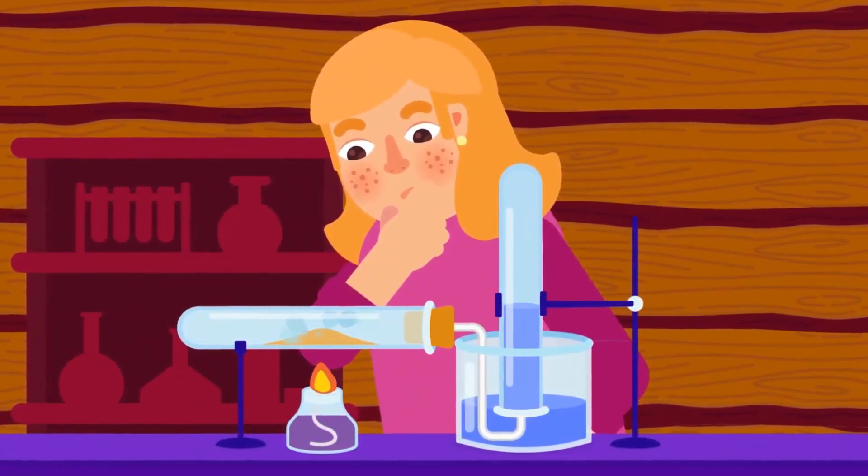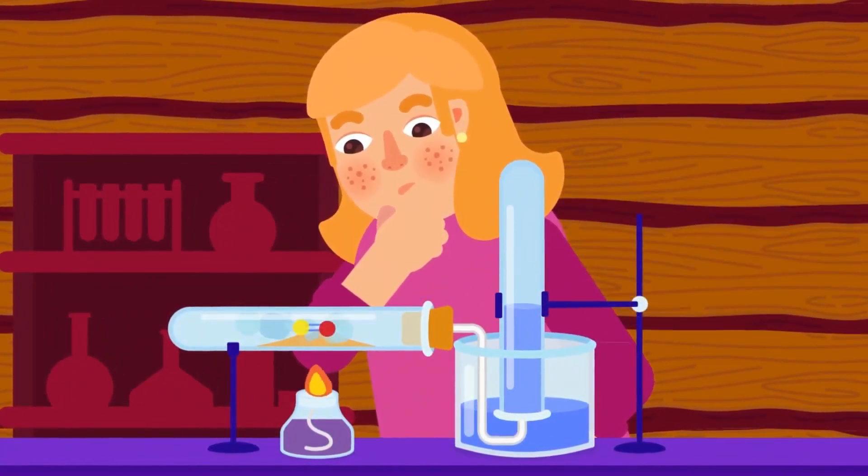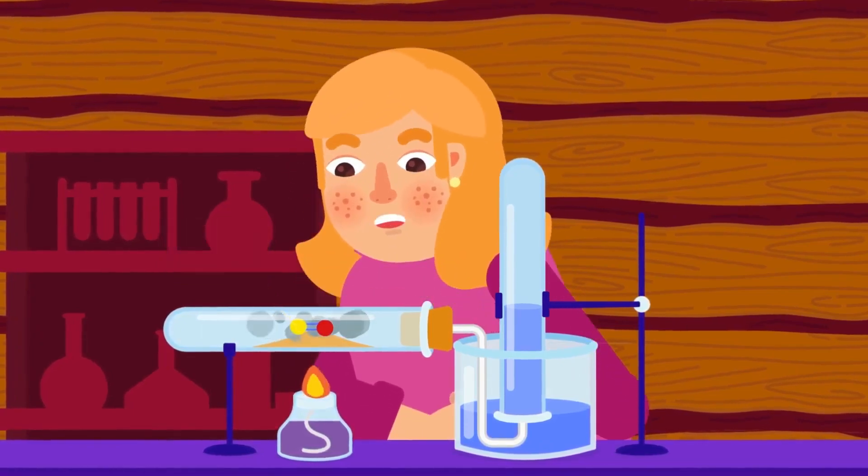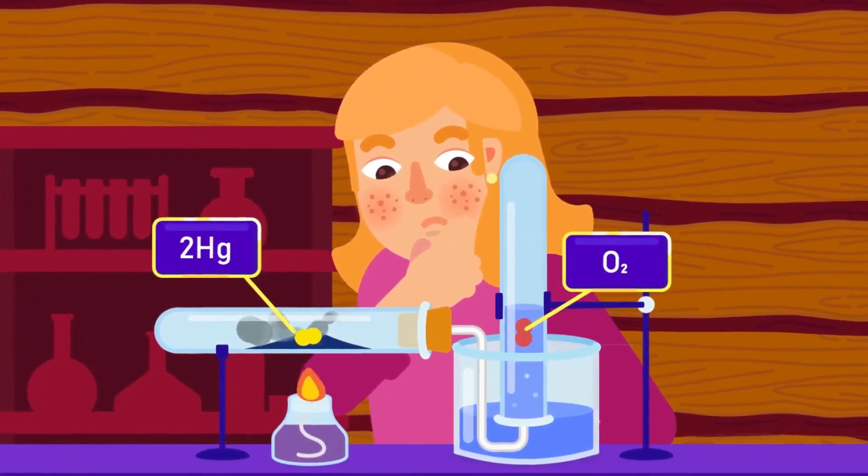Thermal, as the name suggests, involves heating a compound strongly until it breaks down. For example, when mercury oxide is heated strongly, it breaks down into mercury and oxygen. Coming towards electrolysis.